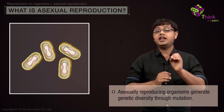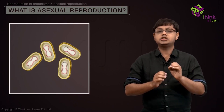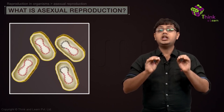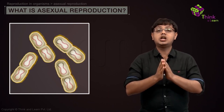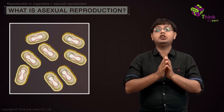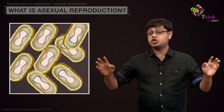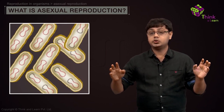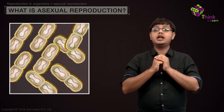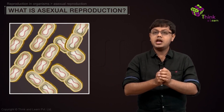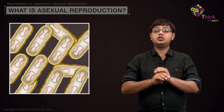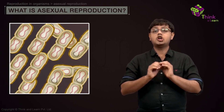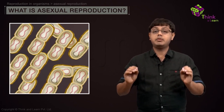Nevertheless, asexual reproduction is a very quick method of multiplication and can produce a large number of individuals. It is highly efficient because there is no dependency on another mate.